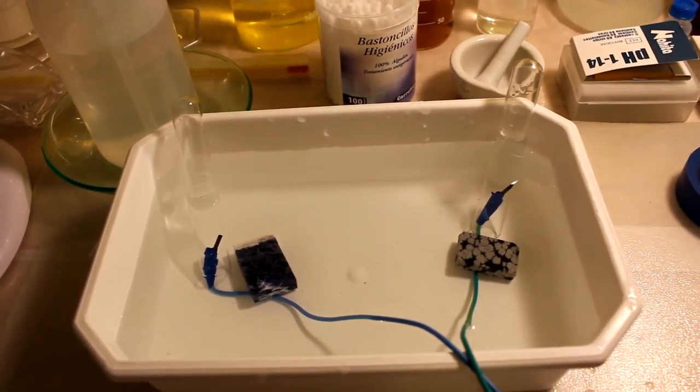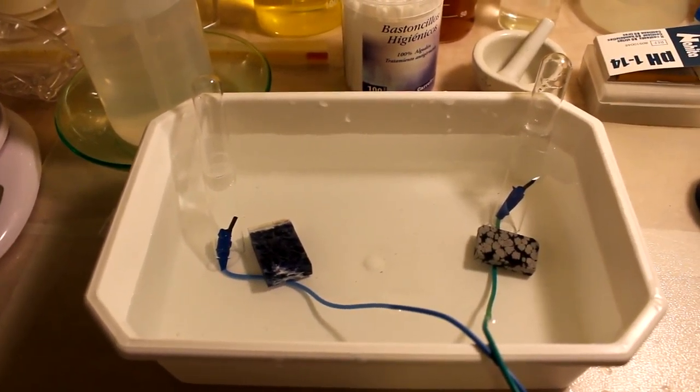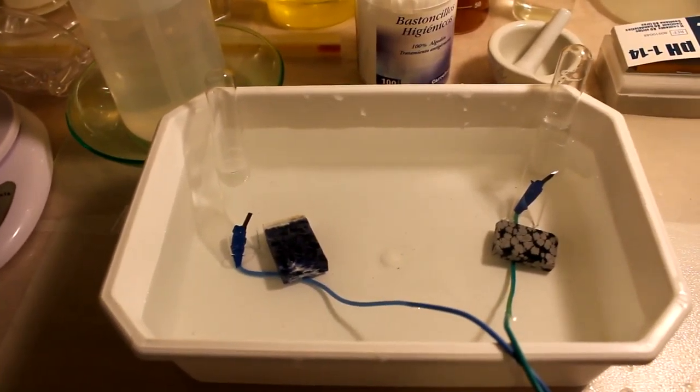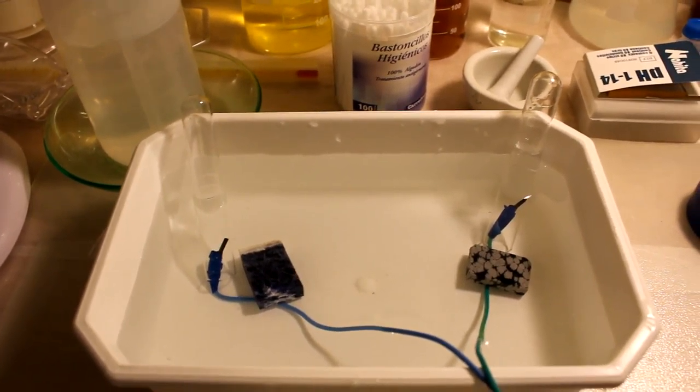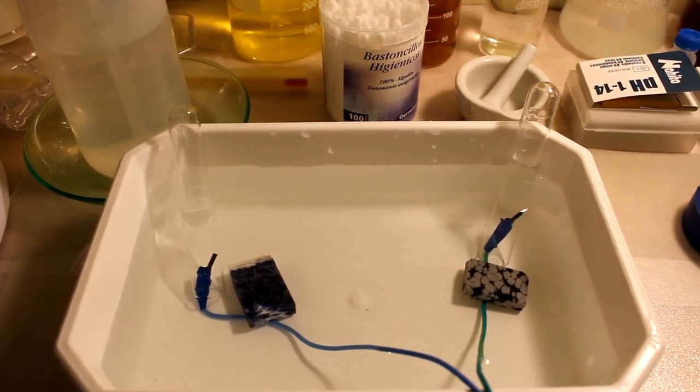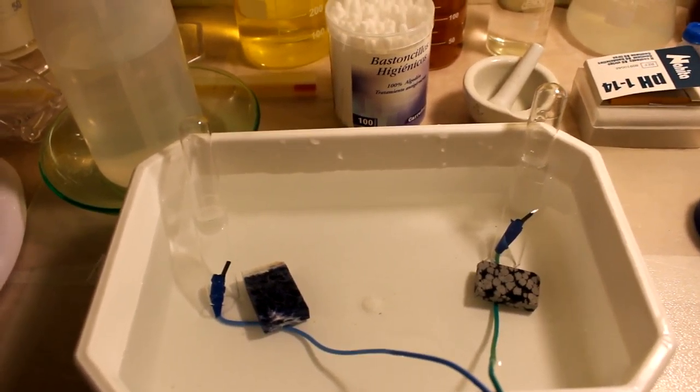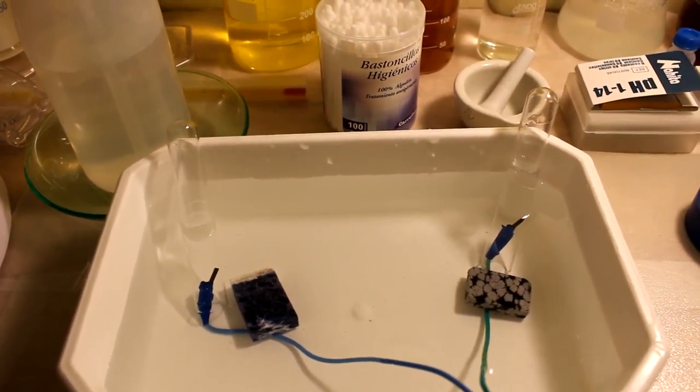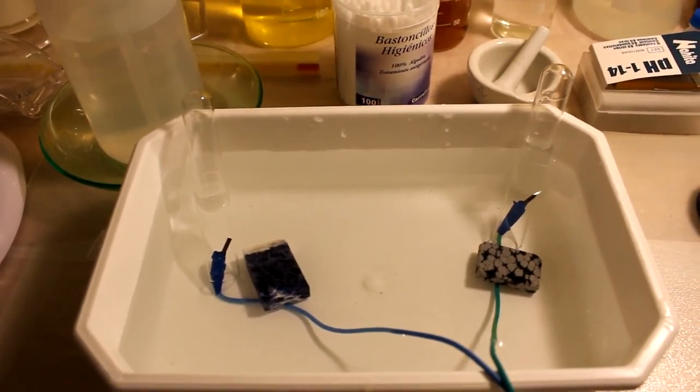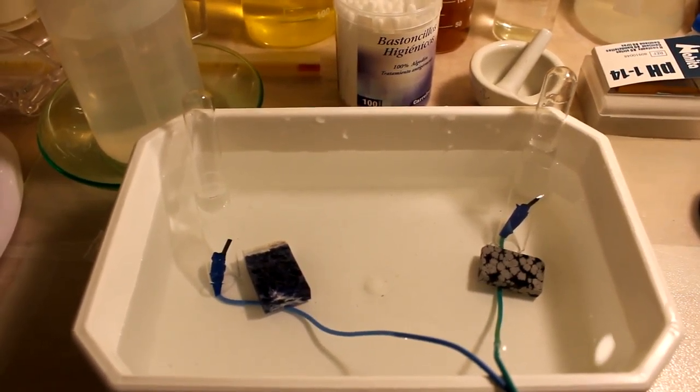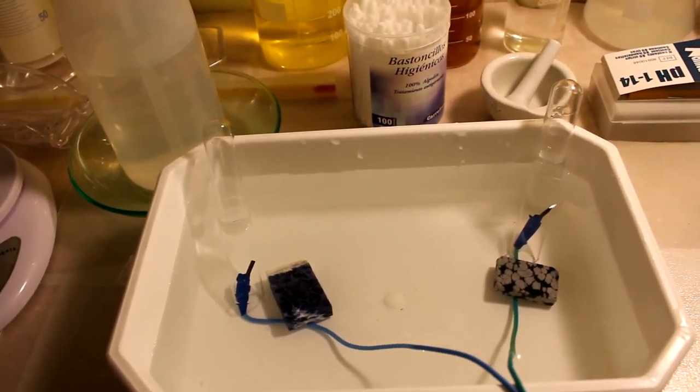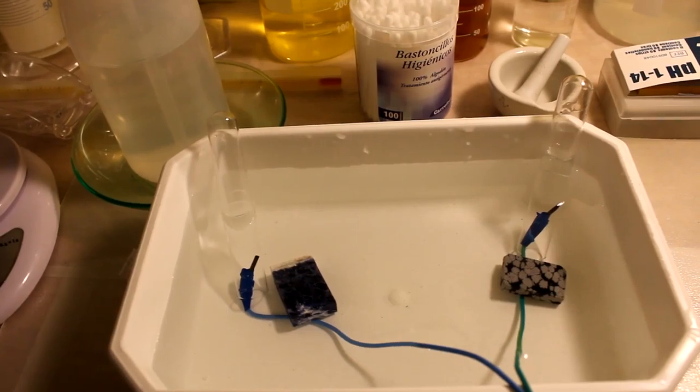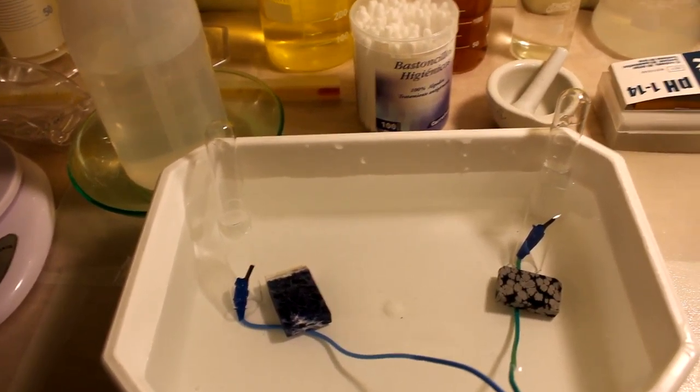Bien. En el polo positivo de la batería, es decir, en el cátodo, el que tiene el cable verde, dentro del tubo de ensayo va a estar el gas del oxígeno. ¿Por qué va a estar ahí el oxígeno y no va a estar en el otro tubo de ensayo? Pues bien, el oxígeno en el agua es un catión, es decir, un ión con carga positiva. Por lo tanto, sentiría atracción por el polo positivo de la batería, es decir, el cátodo.